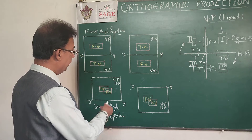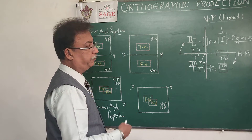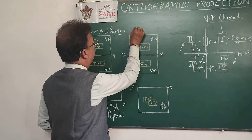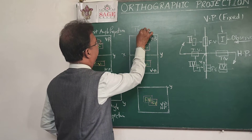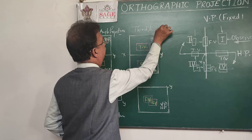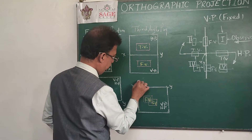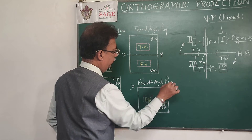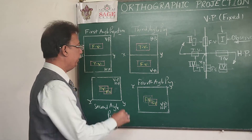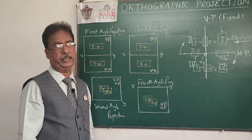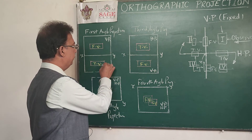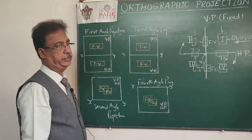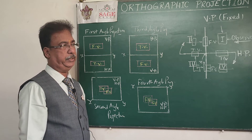In the second and fourth quadrant projections, both planes and both views overlap each other, so we normally do not use second angle or fourth angle projection. Due to this overlapping, we normally use either first angle or third angle projection. In India, first angle projection is the standard used.